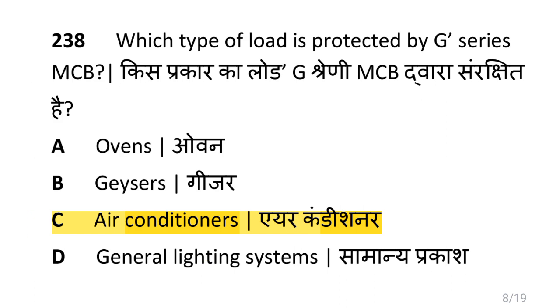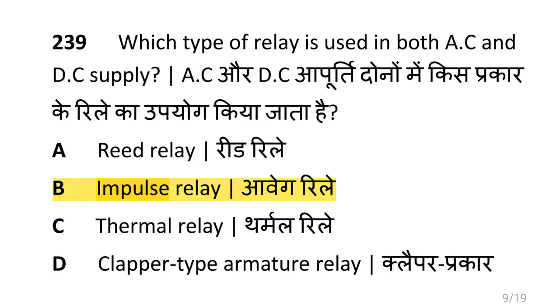Which type of load is protected by G-series MCB? That is air conditioners. Which type of relay is used in both AC and DC supply? That is an impulse relay.